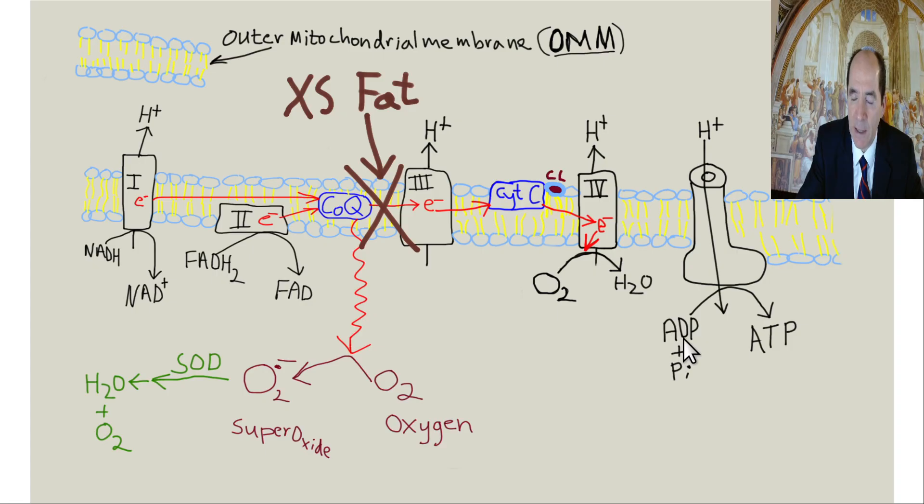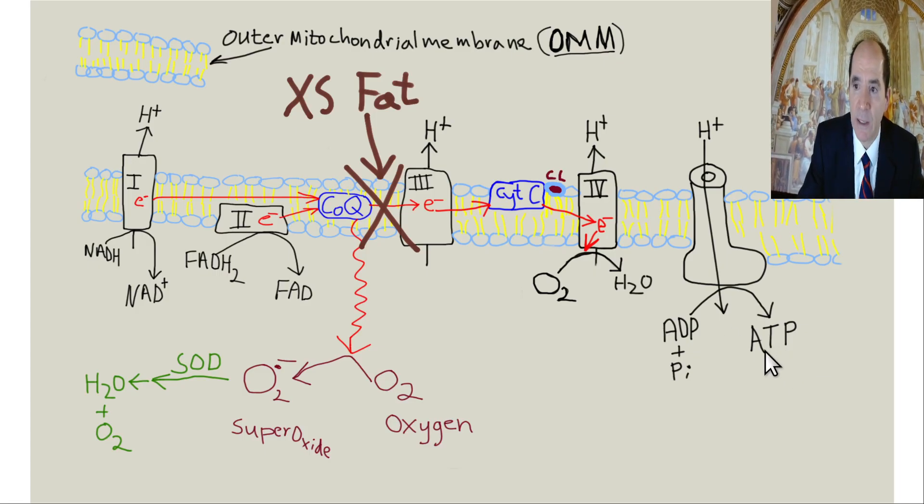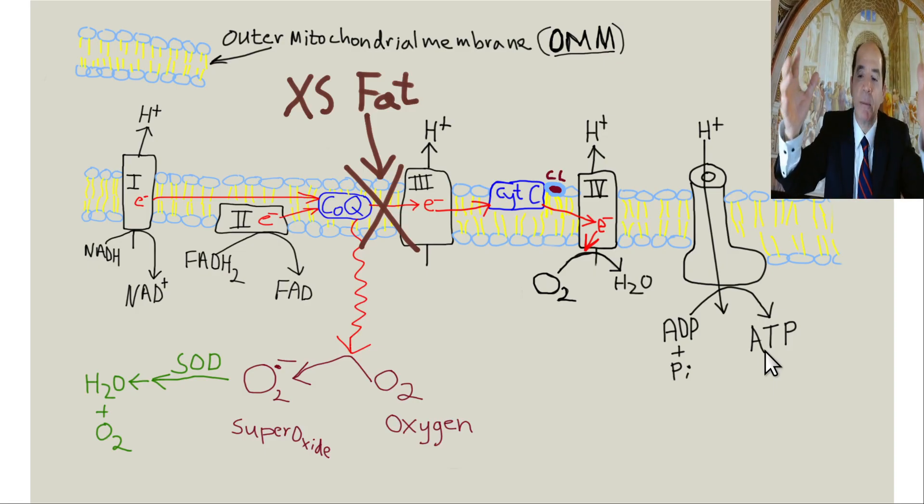ADP is adenosine diphosphate, as in two phosphates, and this added phosphate makes it adenosine triphosphate, having three phosphates. And that's how you make energy for a cell. That's how about 90% of the energy in the human body is made. This is the key to life on Earth right here, this intermitochondrial membrane. And excess dietary fat inhibits that. Excess dietary fat is a bad thing.